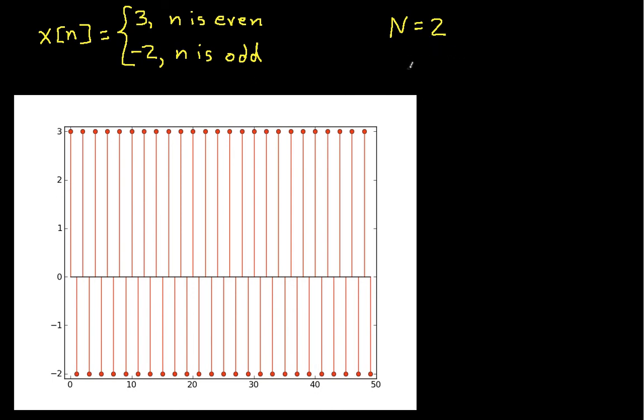To check this, I can say x[n+2] equals what? Well, if n is even and I add 2 to it, then n will still be even. So if x[n] is 3 because n is even, then x[n+2] will also be 3. Similarly, if n is odd, when I add 2 to it, n+2 is odd. And so if x[n] is minus 2, then x[n+2] will also be minus 2. So we can say that x[n] equals x[n+2].